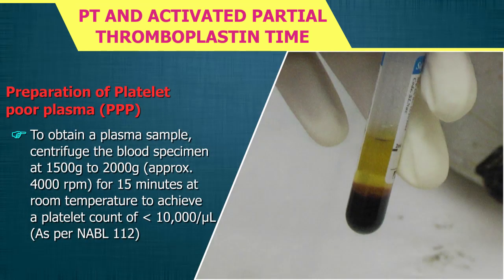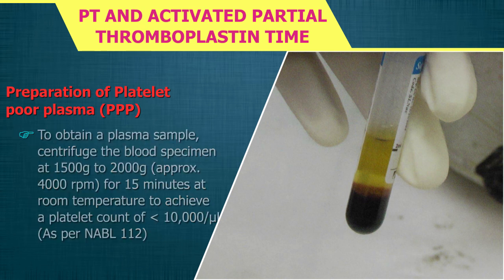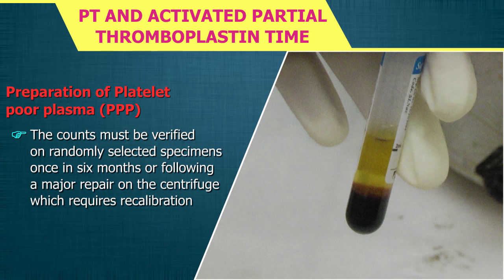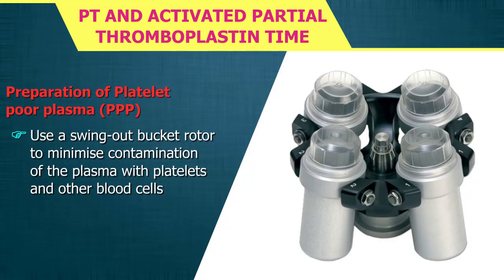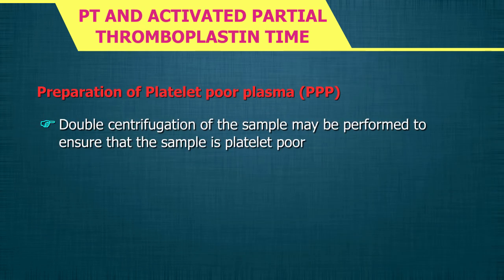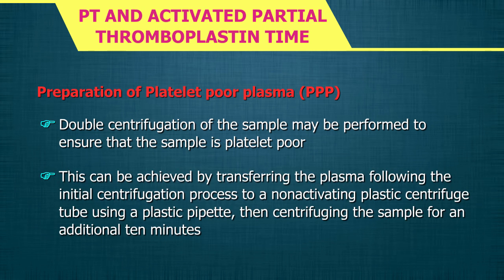To prepare platelet poor plasma (PPP), centrifuge the blood specimen at 1500g to 2000g (approximately 4000 rpm) for 15 minutes at room temperature to achieve a platelet count of less than 10,000 per microlitre, as per NABL standard 112. Counts must be verified on randomly selected specimens once every 6 months or following major centrifuge repair requiring recalibration. Use a swing-out bucket rotor to minimize contamination of plasma with platelets and other blood cells. Double centrifugation may be performed.